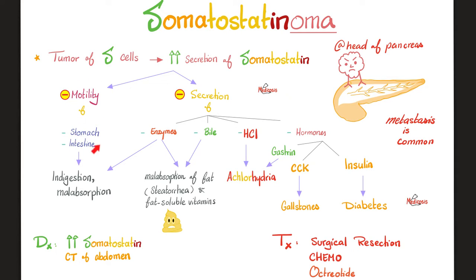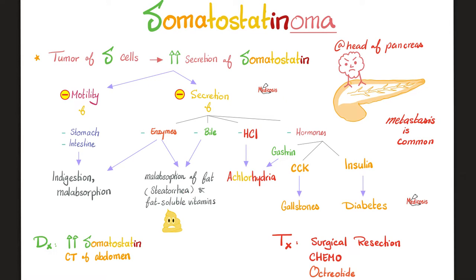When you inhibit the motility of the stomach and intestine, there will be indigestion, and if you cannot digest properly, you will not be able to absorb that food — indigestion causes malabsorption. When somatostatin inhibits the secretions of the digestive enzymes, you also cannot digest, which means you cannot absorb either. When it inhibits the secretions of the enzymes that digest fat and inhibits the secretions of bile, which emulsifies the fat, the end result is that you'll be unable to digest or absorb fat or the fat-soluble vitamins. You get all of that fat in your stool — fat in the stool is called steatorrhea. 'Rhea' means flow, so steatorrhea means lots of fat flowing in your stool.